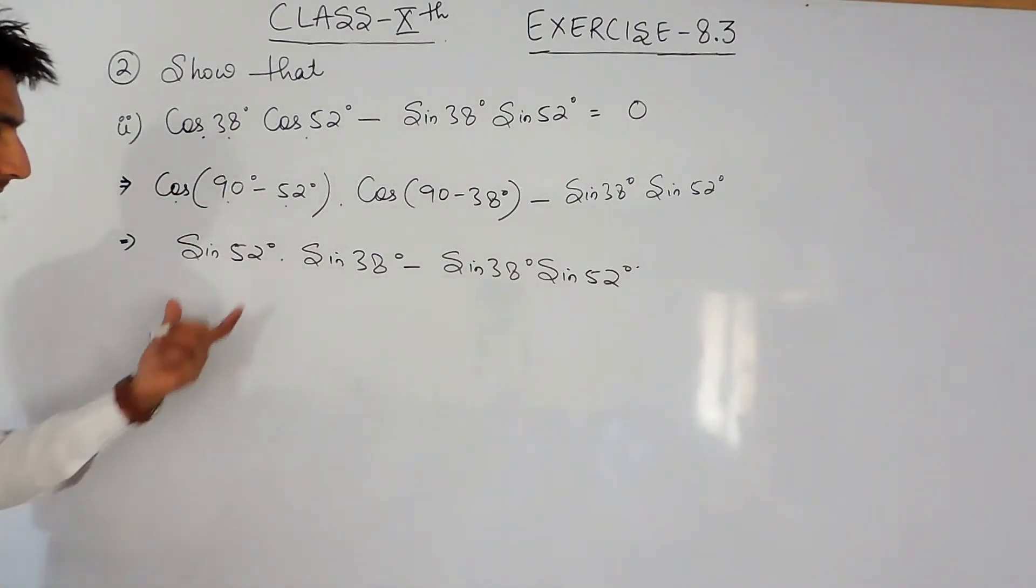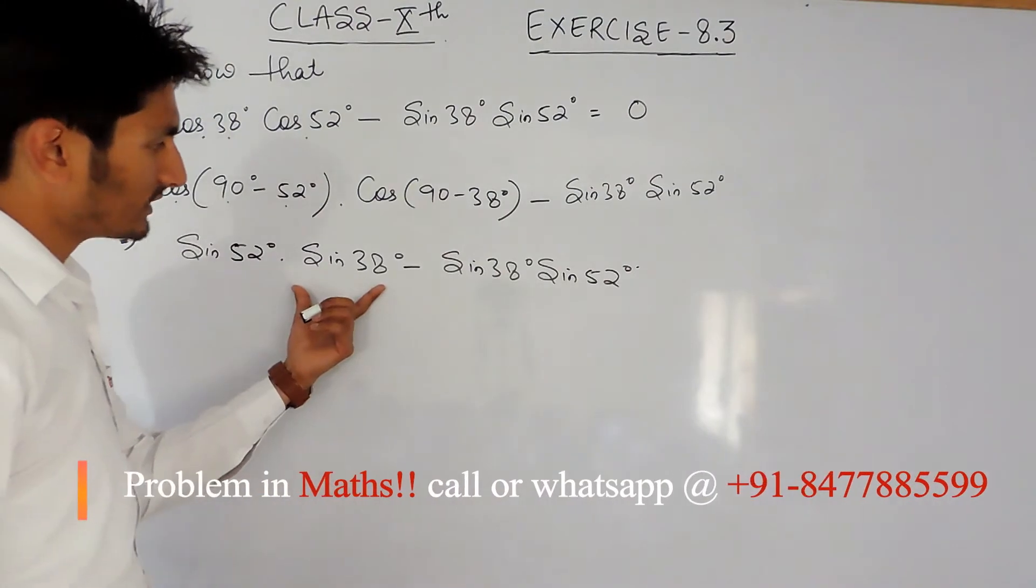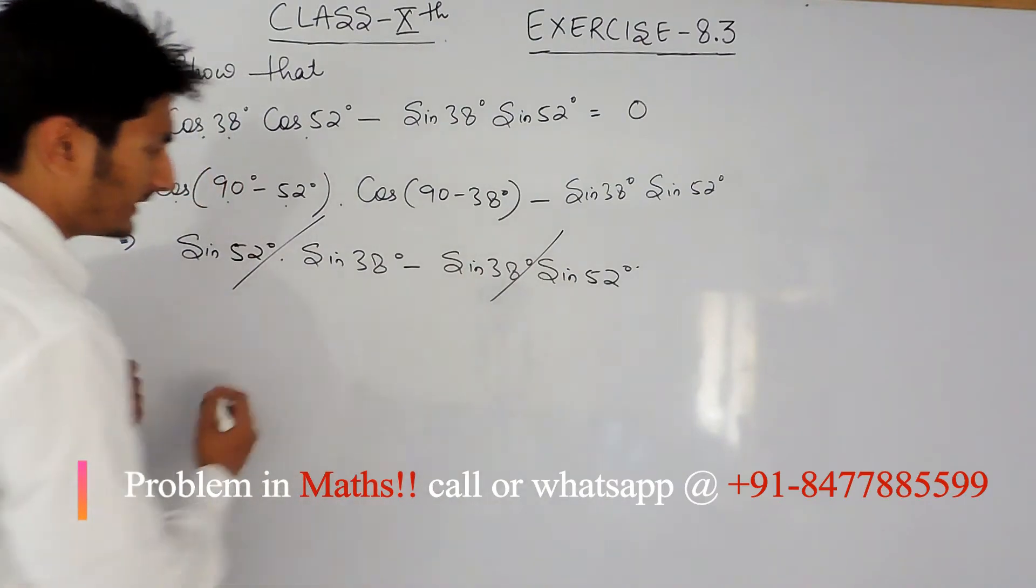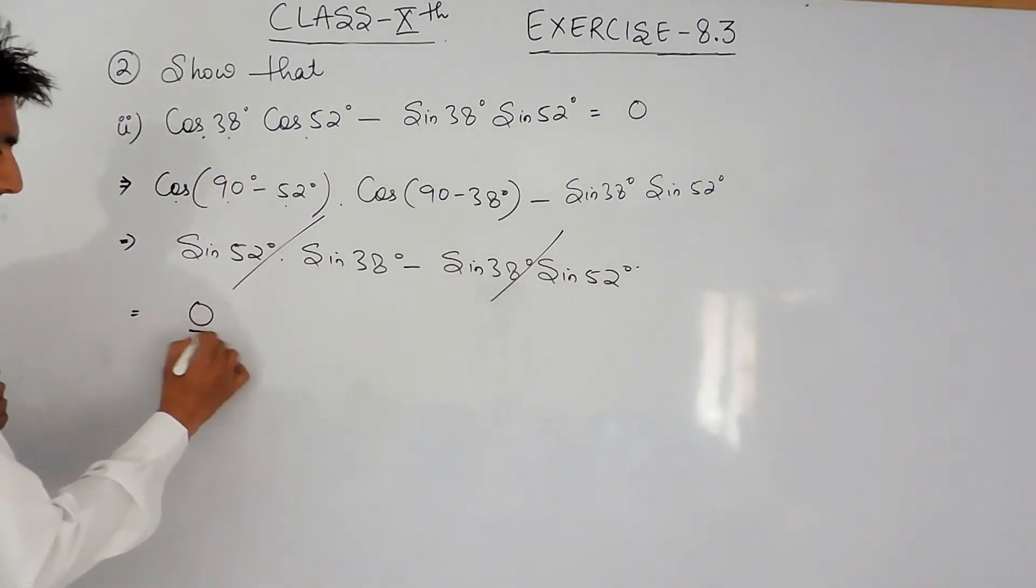In both cases the thetas are the same: sine 52, sine 38, sine 52, sine 38. Both values plus minus can cancel and zero will be the result.